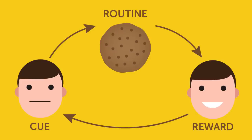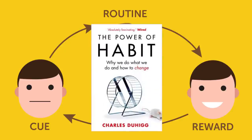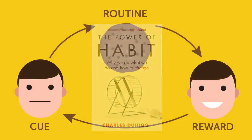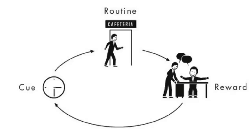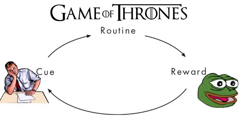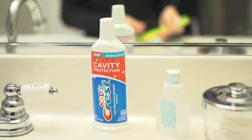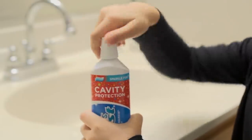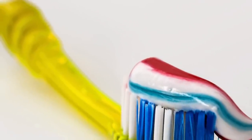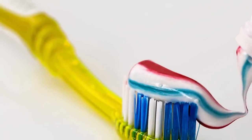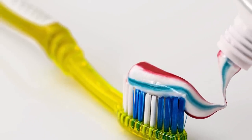First things first, you need to understand the concept of habit loops, which is popularized by the book 'The Power of Habit' — it's a really good book. Basically, a habit loop is how all habits function. Every habit has three parts: a cue, the activity, and the reward. For example, brushing your teeth — the cue is finishing dinner and your mouth feels weird, the action is brushing and flossing, and the reward is your mouth feels fresh. That's a little dopamine spike.